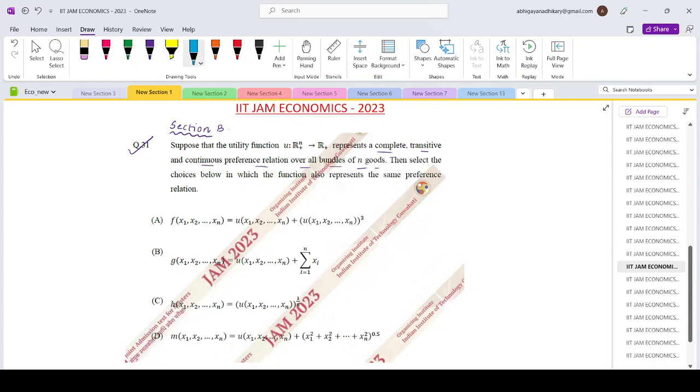So let us say we consider two bundles, a bundle X which is consisting of X1 to Xn units of goods and a bundle Y which consists of Y1 to Yn units of the N goods such that the utility from bundle X is greater than utility of bundle Y. So now we need to check that when we apply any of these functional forms whether the ordering of the bundles remain the same.